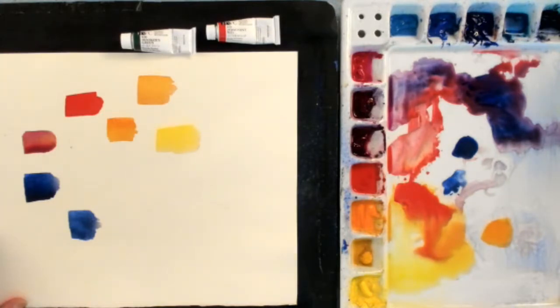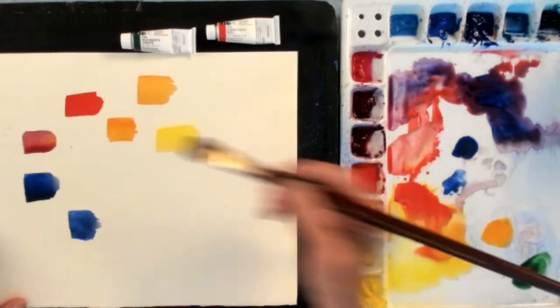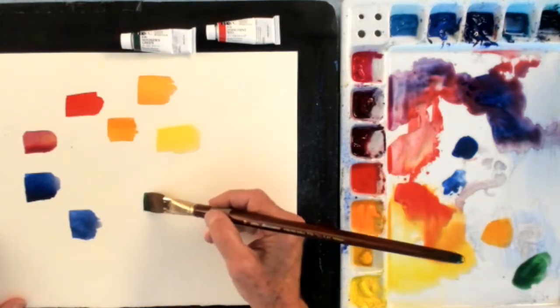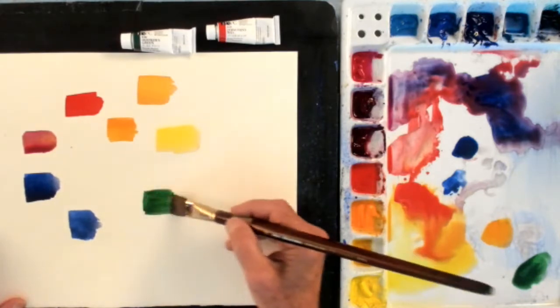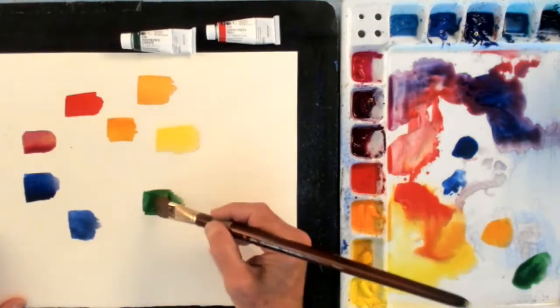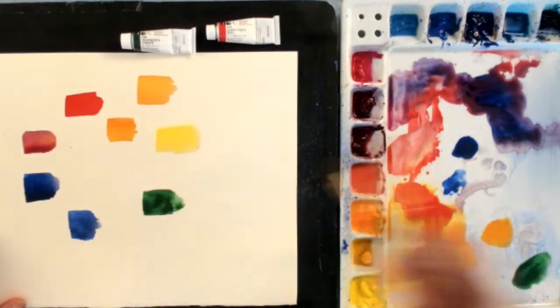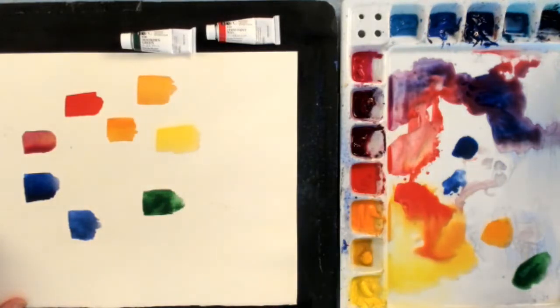And the other color I have in my palette is Hooker's Green. And Hooker's Green is in between the yellow and the blue, it's a mixture. But out of the tube, it looks like that.